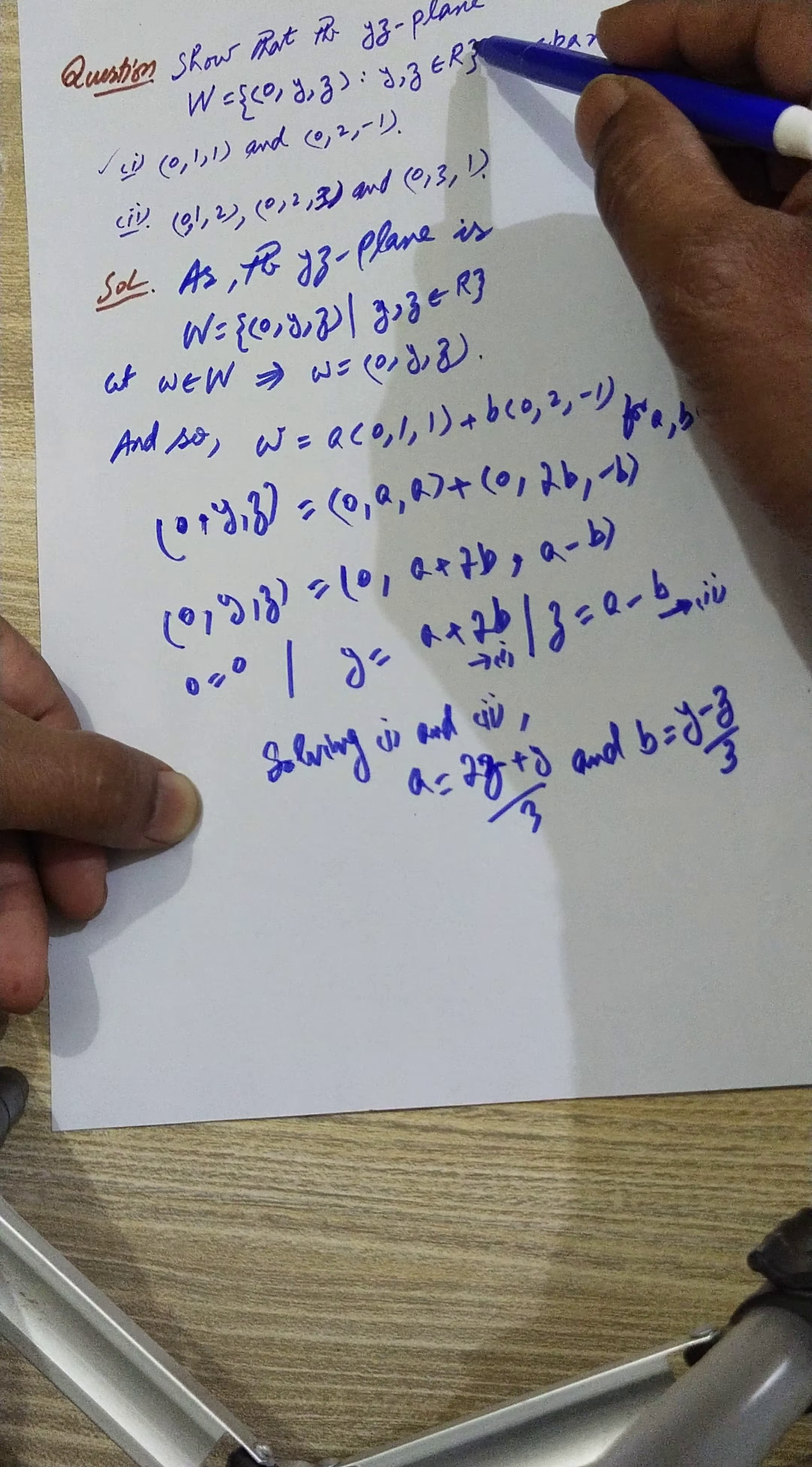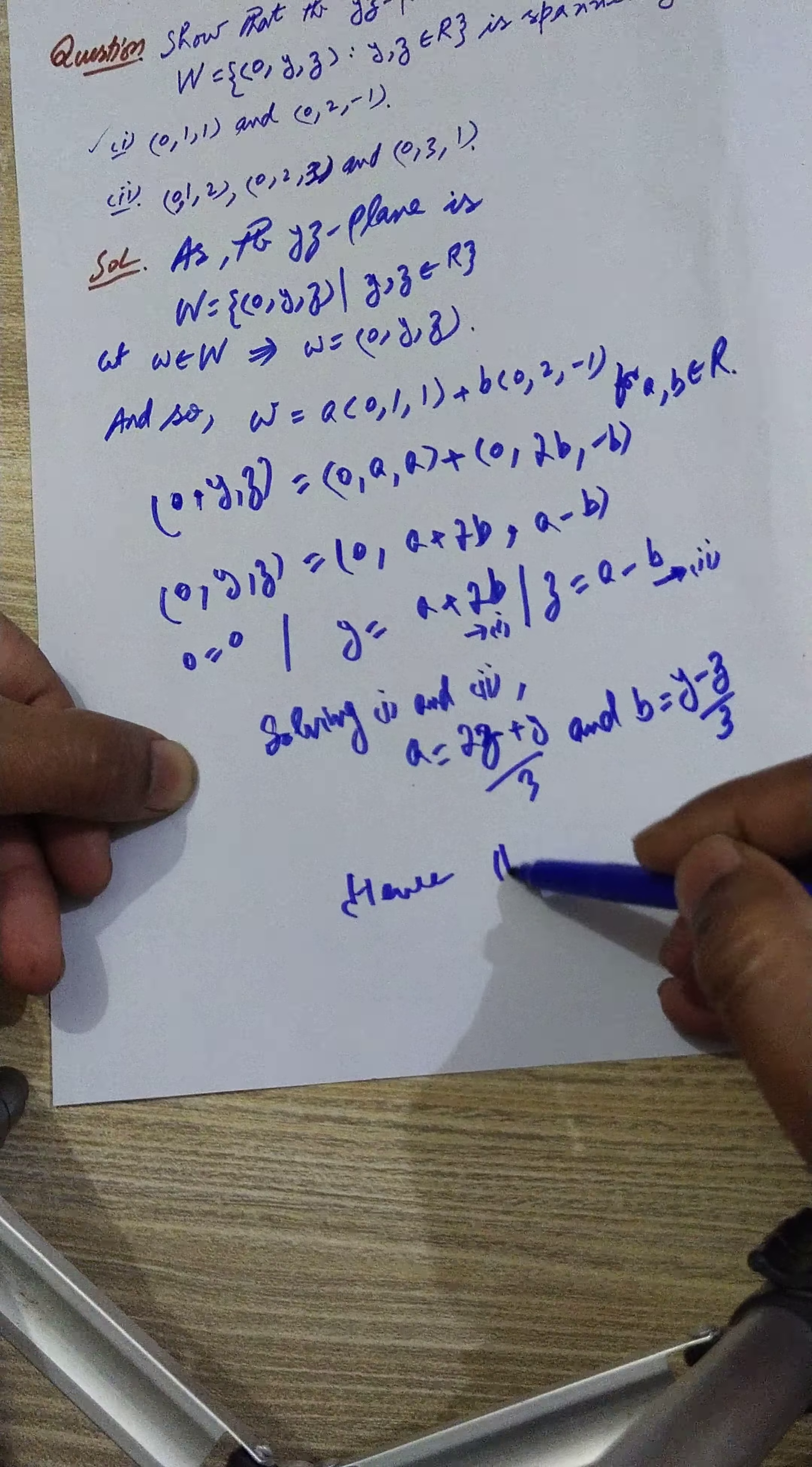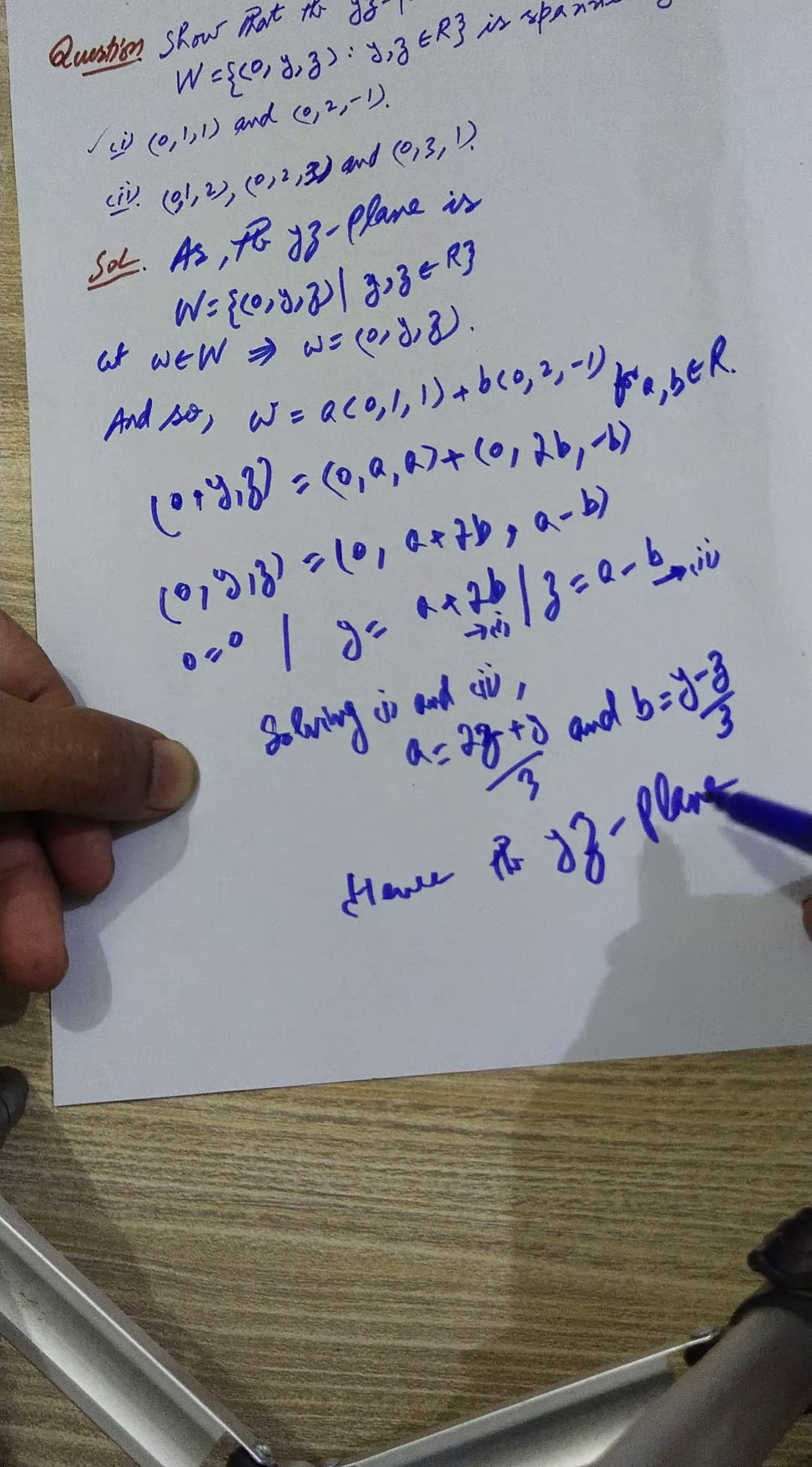So this means that every element can be written as a linear combination of these two.